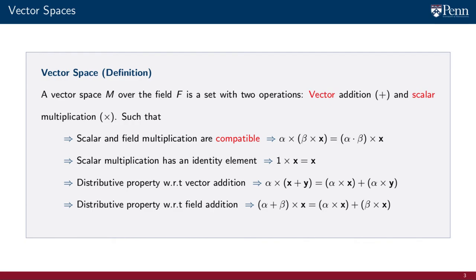As in the case of the field definition, all of this looks elaborate but it is intended to be general. We abstract the minimal number of properties that allows us to derive theorems that are as widely applicable as possible. This generality allows us to claim, for instance, that there is little difference between the linear processing of vectors, functions, and sequences.